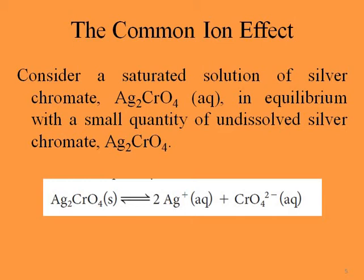This phenomenon is called the common ion effect because we have two different solutions and both of them contain silver ion. By adding silver nitrate, we increase the concentration of silver ion, which is why the equilibrium shifts to the left and we have more precipitate.